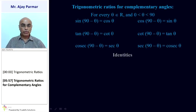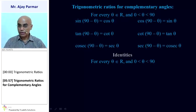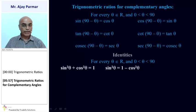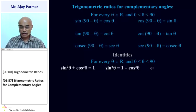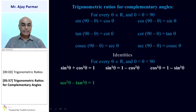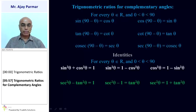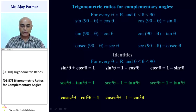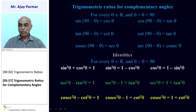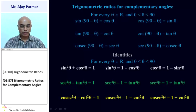The identities you need to remember in order to prove some of the proof-type sums — for every theta that is an acute angle: sin²θ + cos²θ = 1. From this, sin²θ = 1 − cos²θ, or cos²θ = 1 − sin²θ. Also, sec²θ − tan²θ = 1, which gives sec²θ − 1 = tan²θ, or sec²θ = 1 + tan²θ. Similarly, cosec²θ − cot²θ = 1, so cosec²θ − 1 = cot²θ, or cosec²θ = 1 + cot²θ. These identities you should know how to write from left side to right side and right side to left side — very important from an examination point of view.